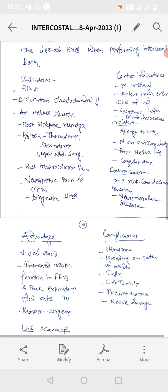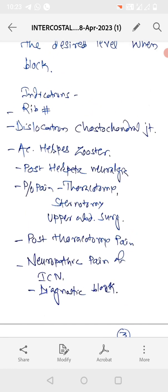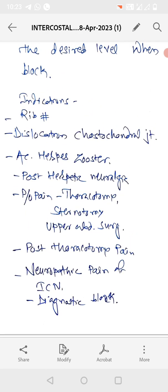Now we will see indications of intercostal nerve block. These are fracture rib, dislocation of costochondral joint, acute herpes zoster,